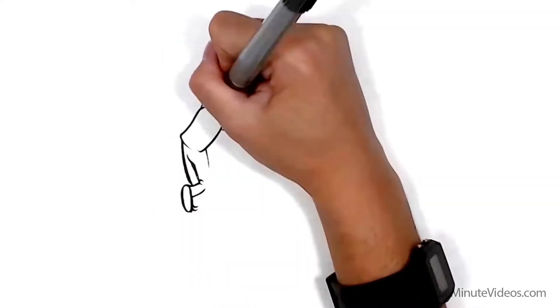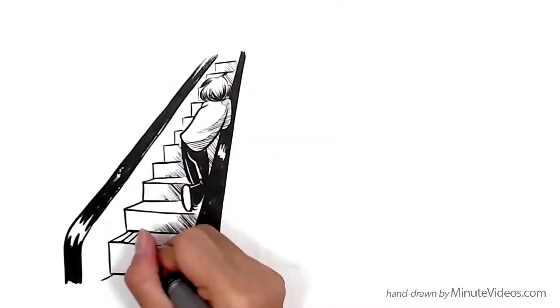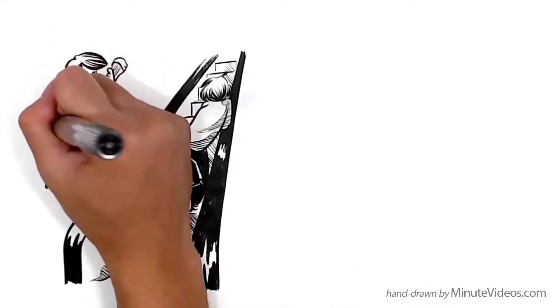Jay always takes the easy road. For example, he likes escalators and hates to take the stairs. When he is practicing the guitar, he stops the moment he's getting stuck.